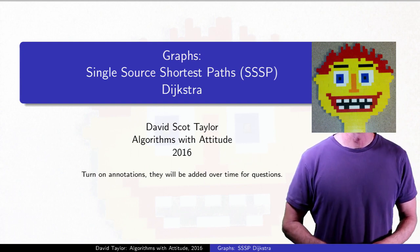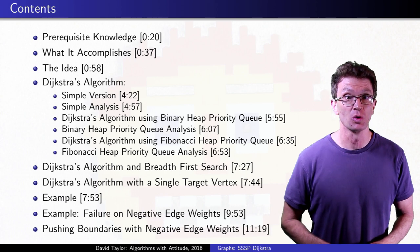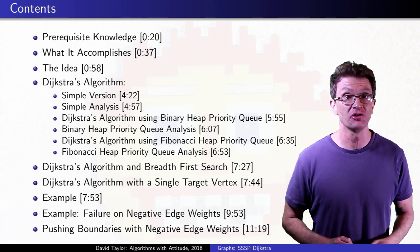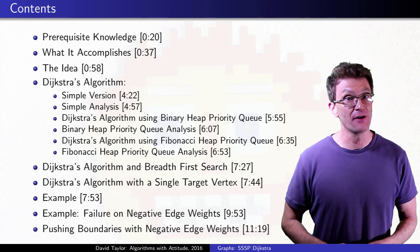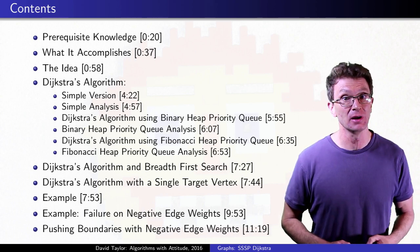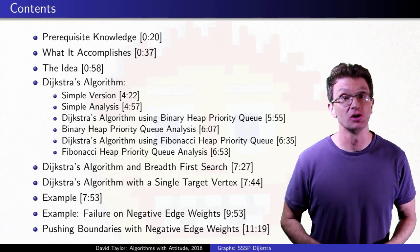This video covers Dijkstra's algorithm for finding single source shortest paths. After mentioning prerequisites, we'll cover what the algorithm accomplishes and get an idea of how it works before seeing the algorithm and its analysis. After an example of it working properly, we'll see how it fails with negative edges and cover how to use it heuristically.